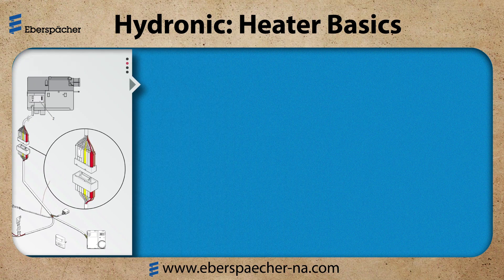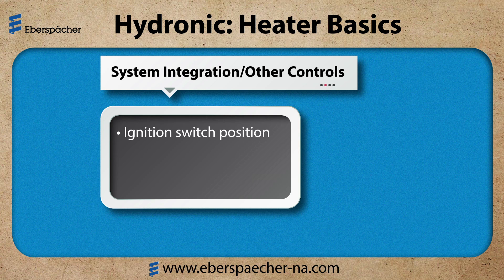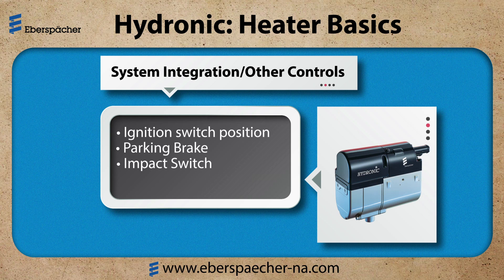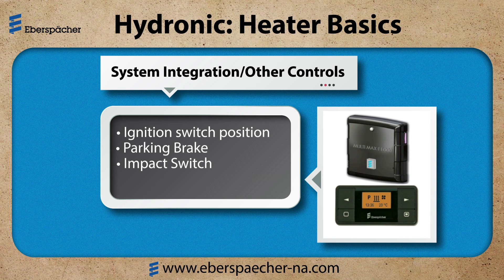Now we look to the system. There could be parameters inside the vehicle that can affect this. On many truck applications, I may need to have the ignition switch in the off or accessory position. Maybe the parking brake must be set. On a school bus, there's an impact switch. I need to meet these parameters for the heater to operate. If the heater is not operating, make sure you are getting power down the yellow wire asking it to run. The coolant heater can be integrated into the climate system in the vehicle, such as the International Max Power or the Freightliner ParkSmart systems.